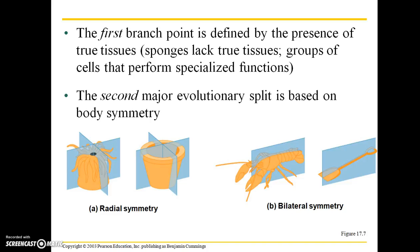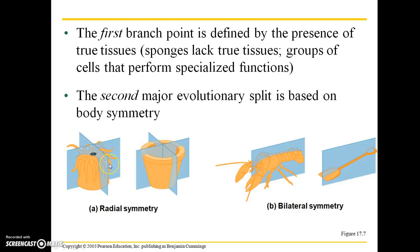The second major evolutionary split is based on body symmetry. Most animals have bilateral symmetry, meaning if you were to place an invisible plane down the midline of that animal's body, it would roughly separate that animal into two equal halves. With radial symmetry, it's more of a round body plan — you would have to make two planes in order to have roughly equal sections.